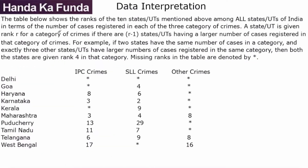Now we are given a table. The table shows the rank of the 10 states among all states of India in terms of the number of cases registered in the three categories of crimes. A state is given rank R for a category of crimes if there are R-1 states having a larger number of cases registered in that category. So if two states have the same number of cases, we look at how many are above them.